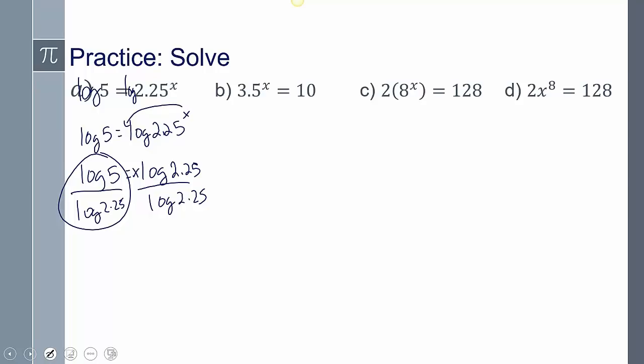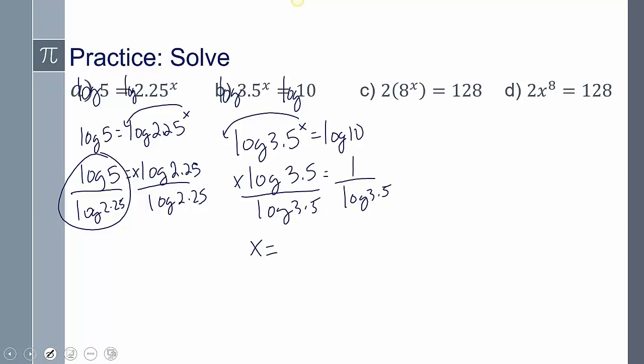Let's go over it. So log to both sides. I get log 3.5^x equals log 10. That moves to the front. So I get x log 3.5 equals 1. Wait, why did I do that? Because log 10, log base 10 of 10 is just 1. Divide both sides by log 3.5. Now, you didn't have to change it to 1. If you just left it as log 10 and entered that in your calculator, you'd get the same thing. So no worries.